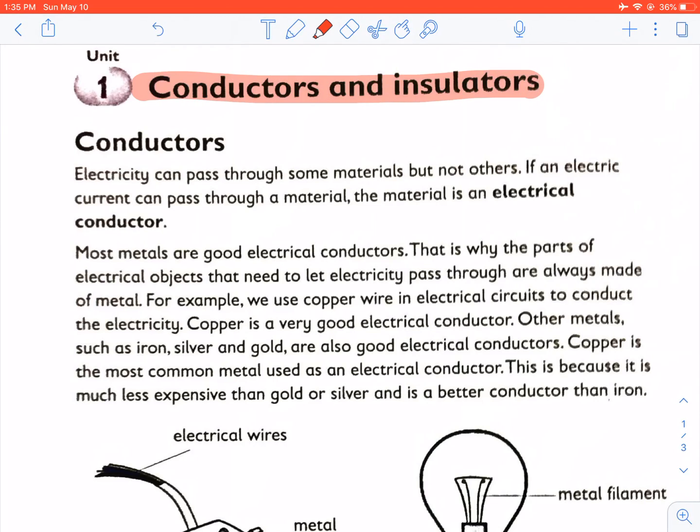An electrical conductor is a material that electricity can pass through. An electrical insulator is a material that electricity cannot pass through.